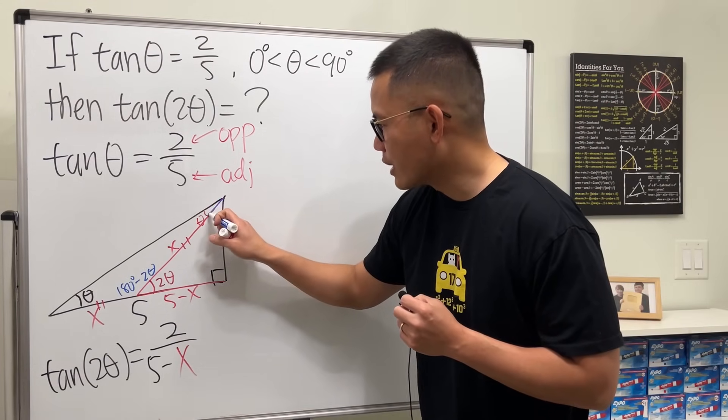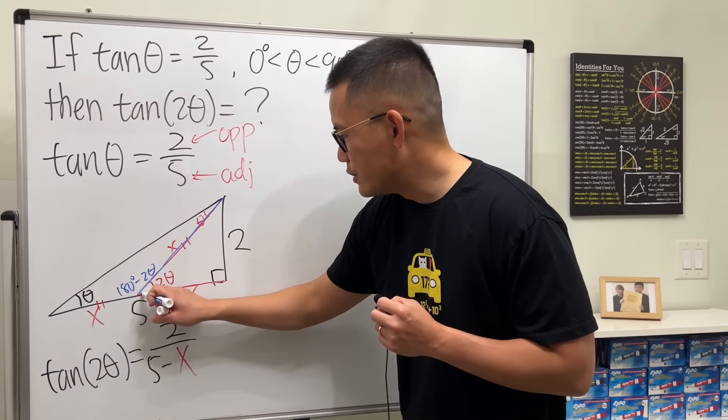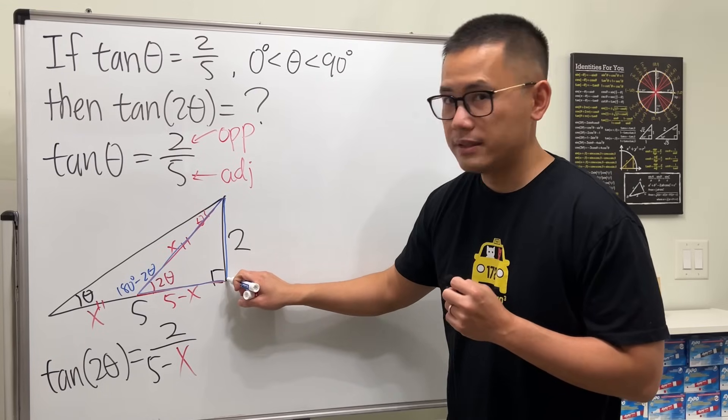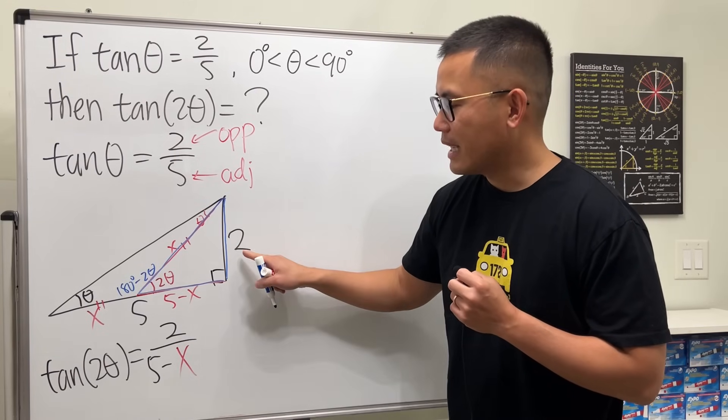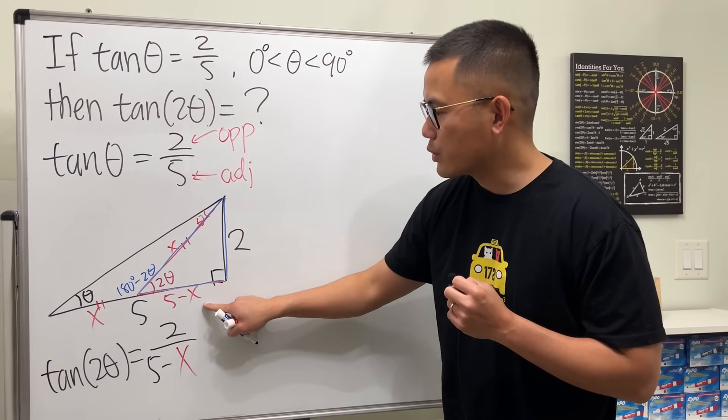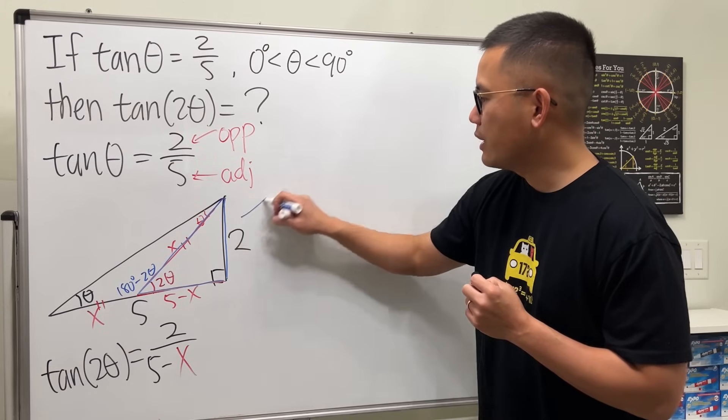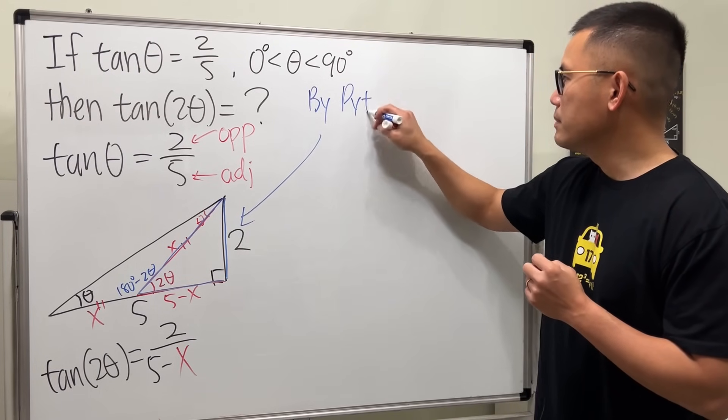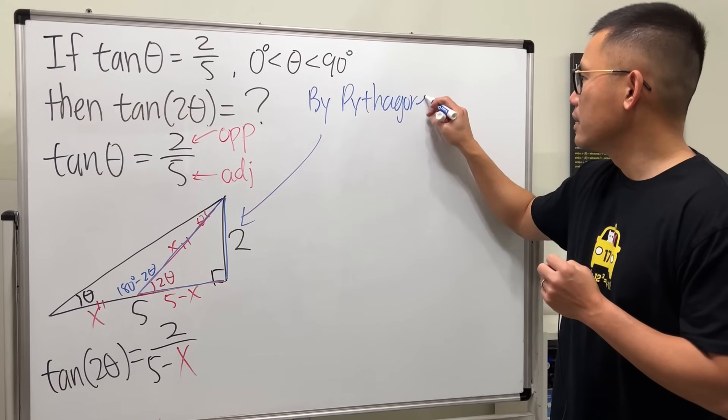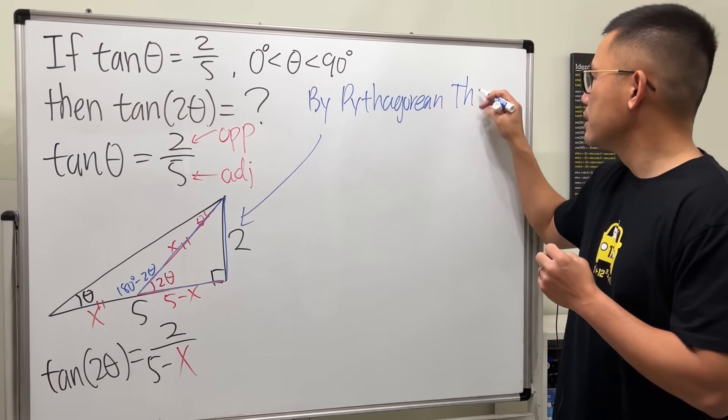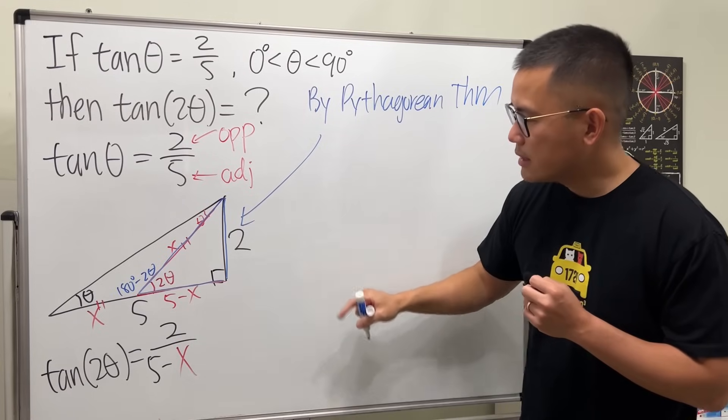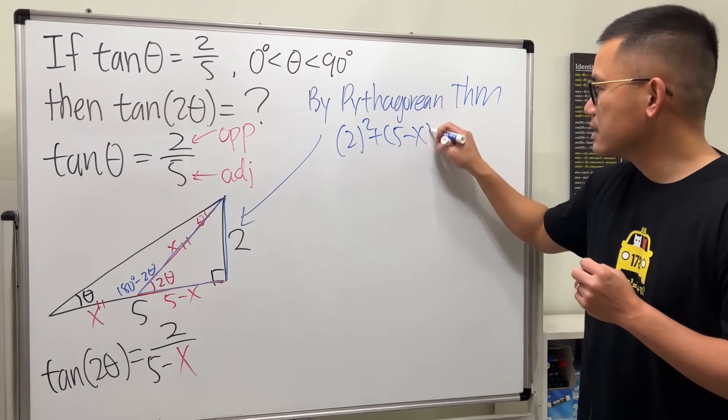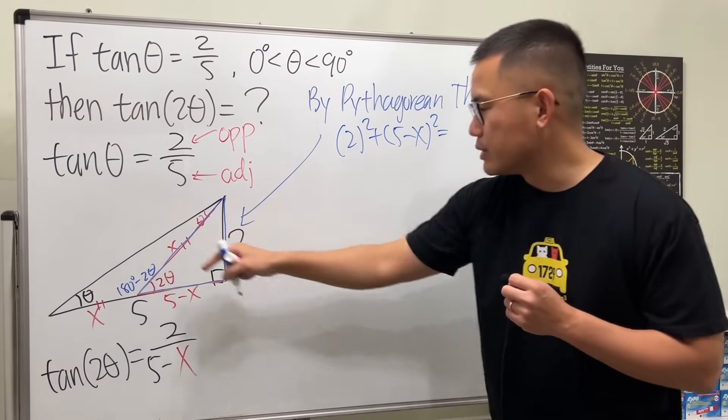But now what is x though? Now let's look at this triangle one more time. This time though, we're just going to focus on the sides. It's a right triangle. Pythagorean theorem: this square plus that square is equal to that square. So right here by Pythagorean theorem, we know that 2² + (5-x)² equals the hypotenuse which is x².